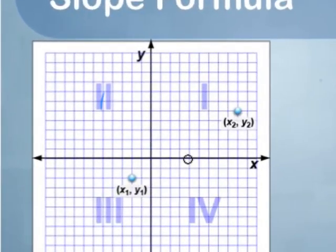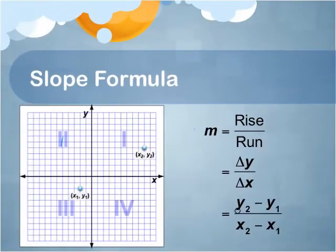Here are two points. This one has coordinates x1 and y1, and this one has coordinates x2 and y2. Use these coordinates in the slope formula to calculate the slope.